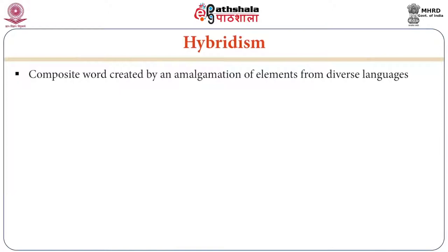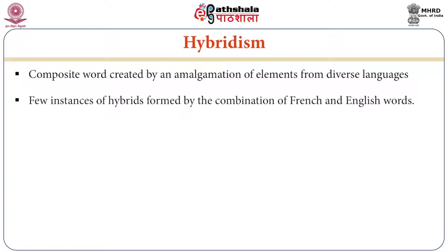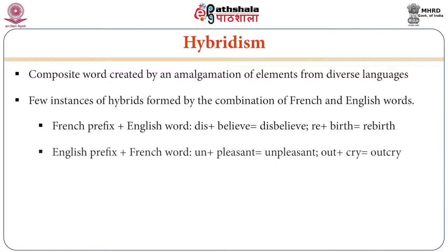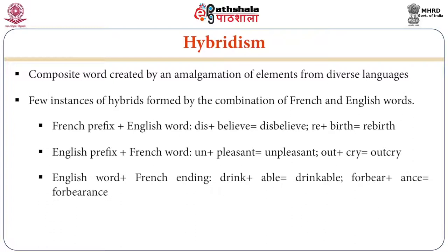We should also know about hybridism — that means composite word formation. Composite words were created by an amalgamation of elements from diverse languages. For instance, hybrids formed by combining French and English words: first, French prefix plus English word — dis + believe = disbelieve; re + birth = rebirth. Then English prefix plus French word — un + pleasant = unpleasant; out + cry = outcry. Third, English word plus French ending — drink + able = drinkable; forbear + ance = forbearance.